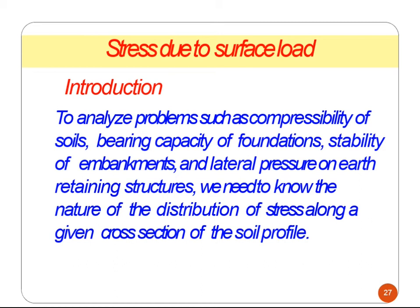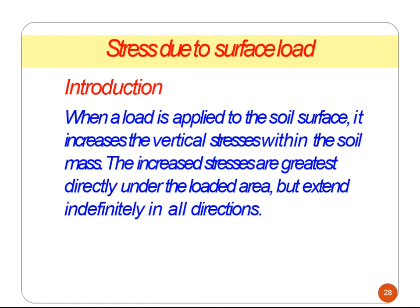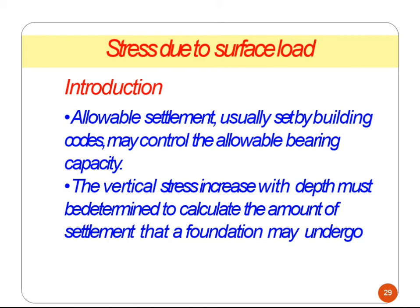The second case is that we need to analyze problems such as compressibility of soil, bearing capacity of foundation, stability of embankment, and lateral pressure on earth-retaining structures. We need to know the nature of the distribution of stress along a given cross-section of the soil profile. When a load is applied to the soil surface, it increases the vertical stress within the soil mass. The increases of stress are greatest directly under the loaded area but extend independently in all directions. Allowable settlement, usually set by building codes, may control the allowable bearing capacity.